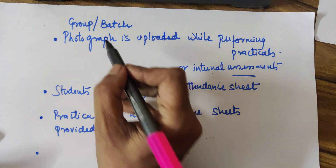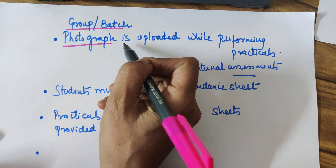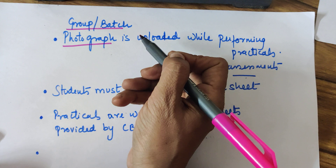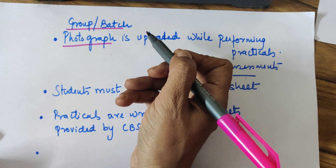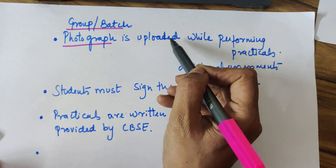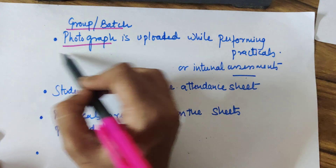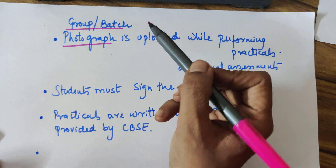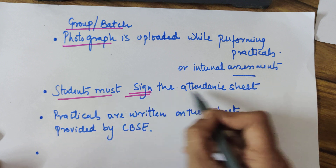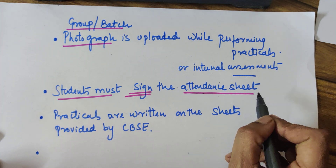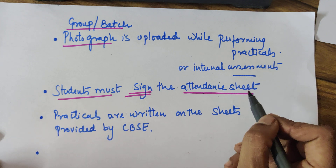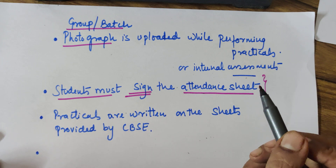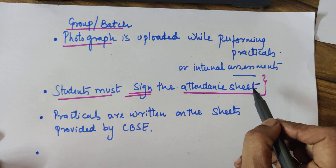When you are doing your practicals, there is a group or batch photograph to be uploaded — whether during your practicals, English project assessment, listening skill, or maths practical. The photograph is uploaded to CBSE on that particular day and time, and it is a group photograph where each one of you has to be visible. Also, all students have to sign the attendance sheet on the day of their board project or practical work, as this sheet goes to CBSE as proof that you were present.